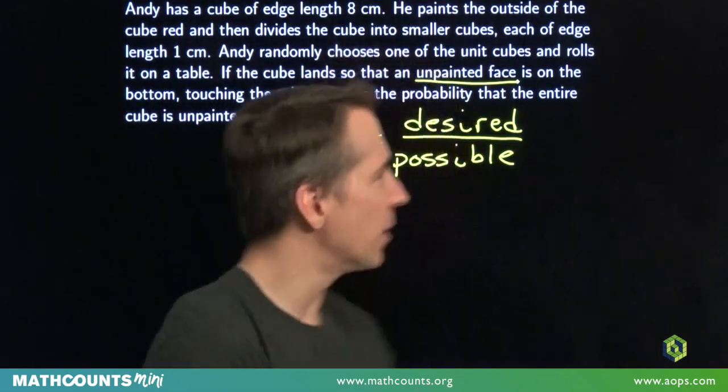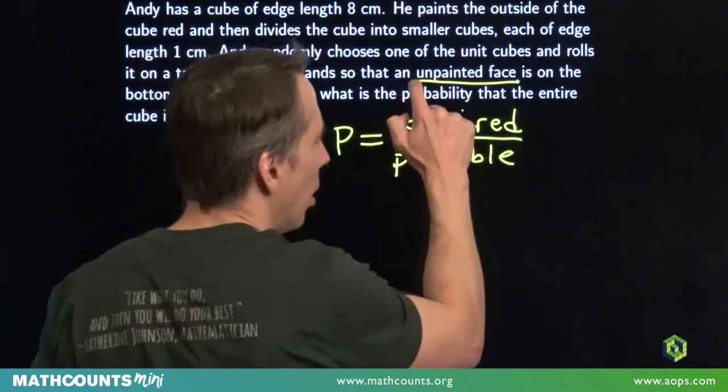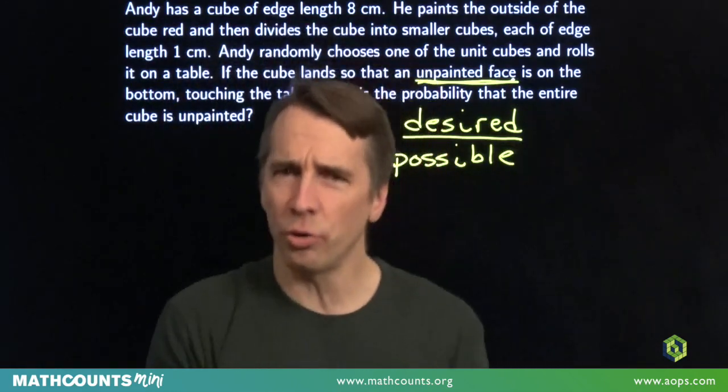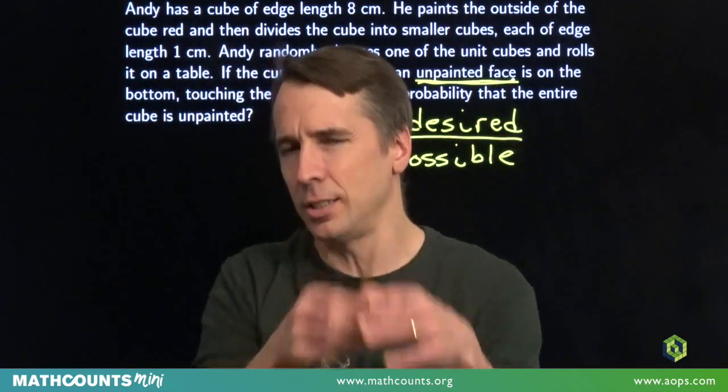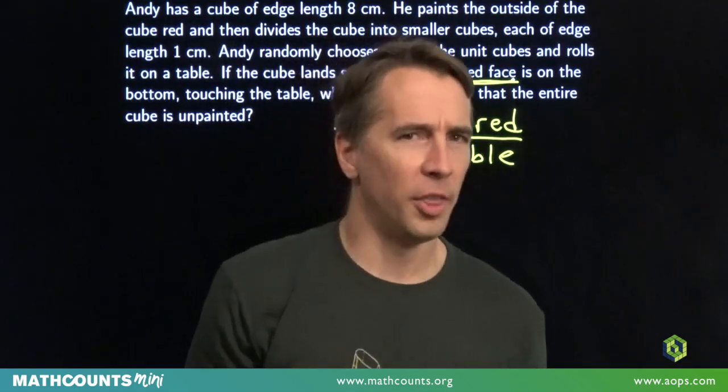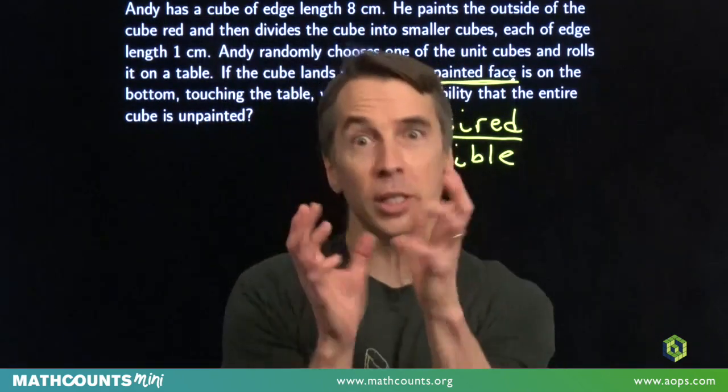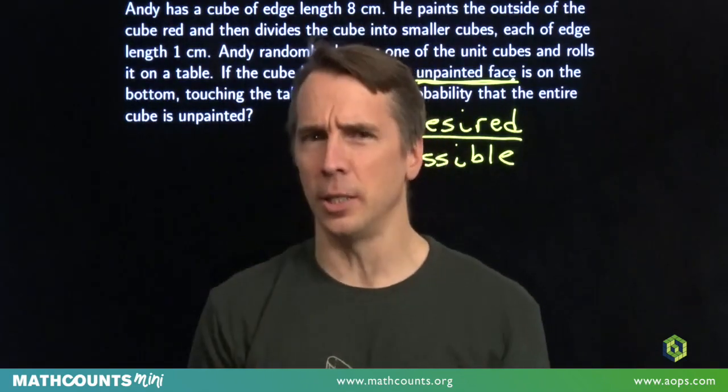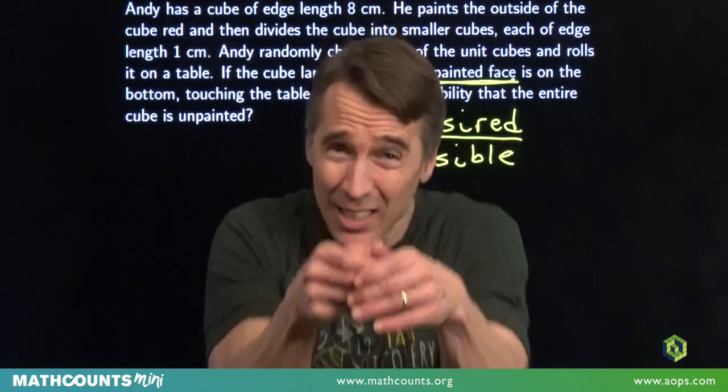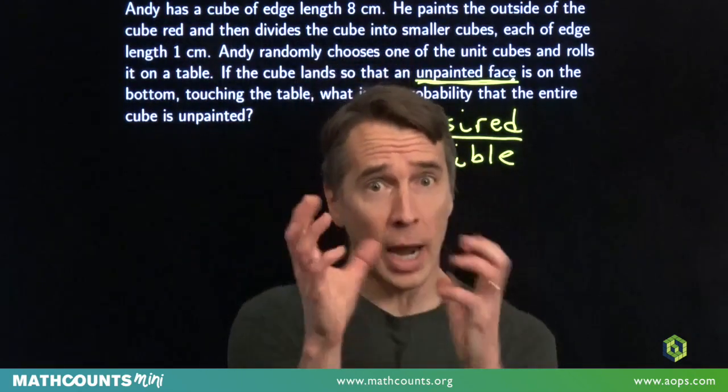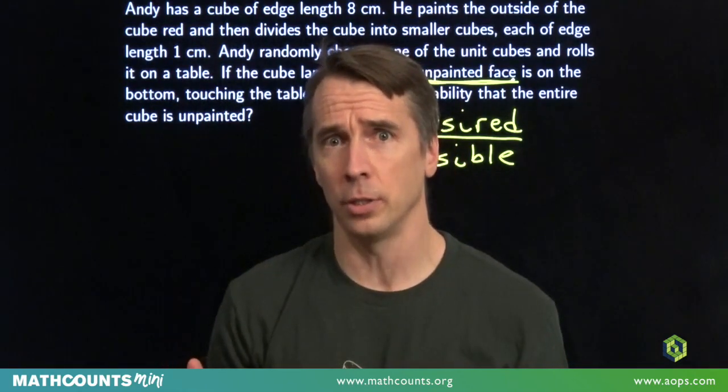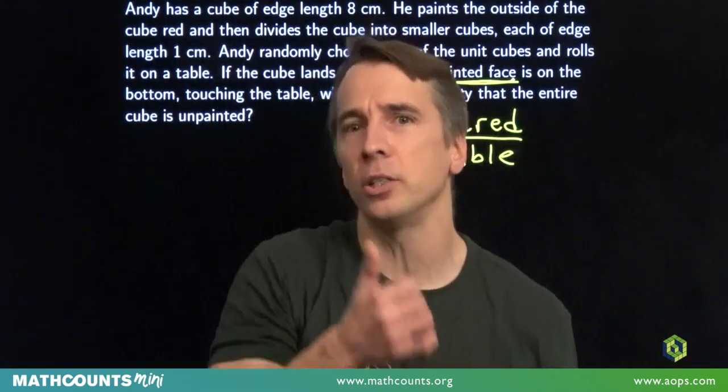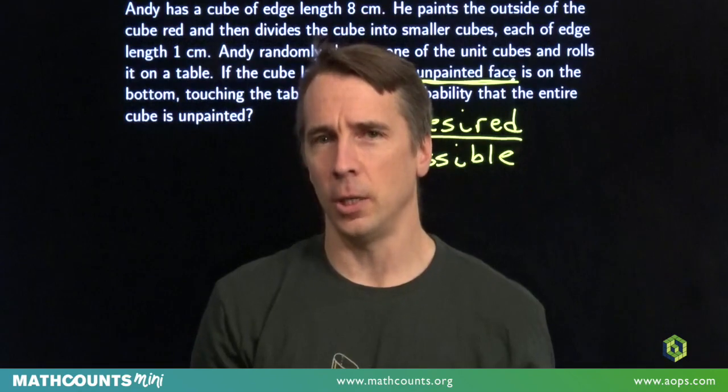Well, I want you to imagine something a little bit different. Instead of being told that it's an unpainted face that's sitting there on the table, imagine they told us that it's a painted face sitting there on the table. Then, what is the probability we have one of these completely unpainted cubes? Yeah, that's right, then the probability is zero. If we knew that face were painted, then we know for sure he didn't grab one of these unpainted cubes. We know for sure that all of the unit cubes are no longer equally likely to have been the one that he chose.